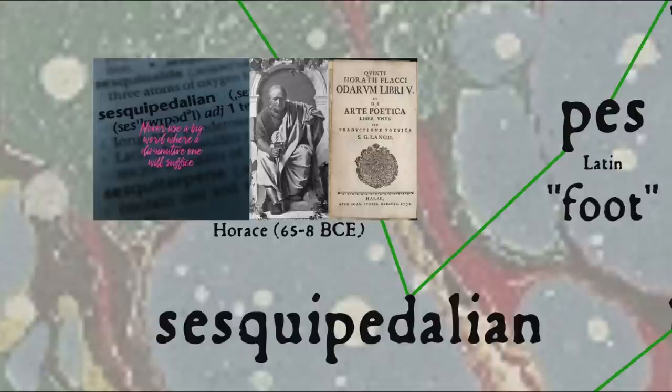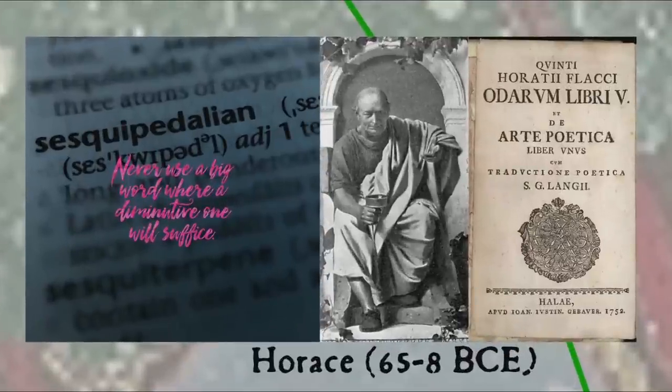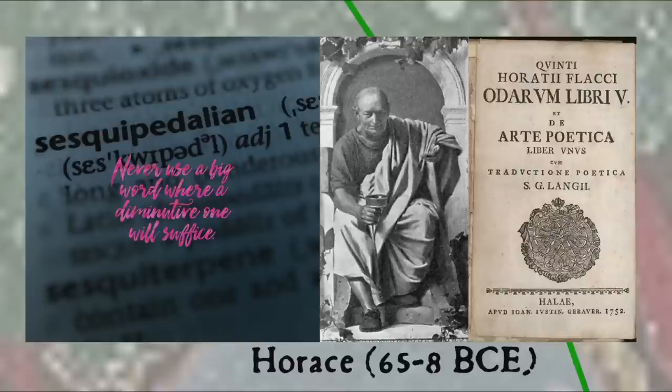Another word used to describe this kind of verbosity is sesquipedalian, an intentionally ironically long word. Meaning literally a foot and a half long, and that's a foot in the poetic sense of a metrical foot, the word comes from Latin sesquipedalis, a word used humorously by the Roman poet Horace in his Ars Poetica to criticize poets who use overly long words.